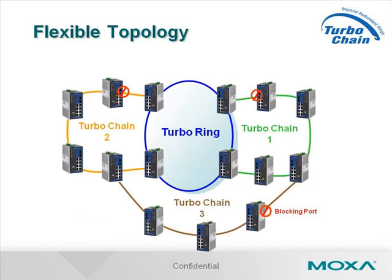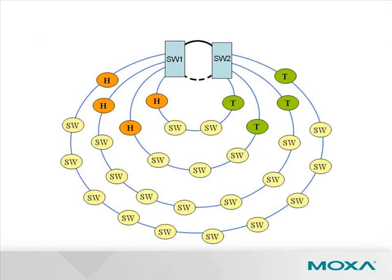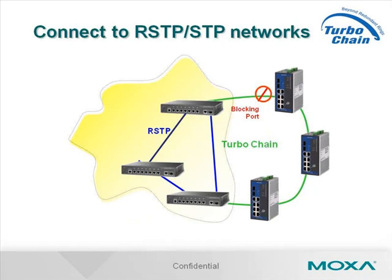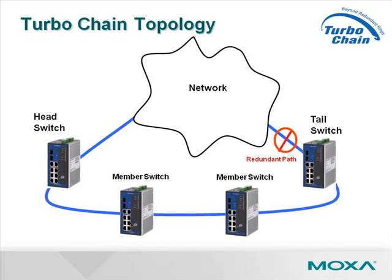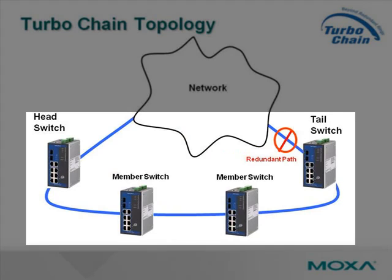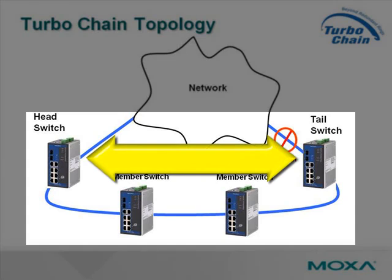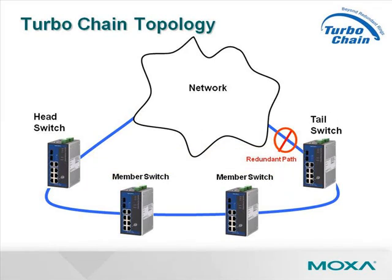Second, TurboChain is flexible — you are no longer limited to ring-only topologies. Third, TurboChain saves you time and money. TurboChain operates on the principle of an open ring or a chain link, so there is no need to close the ring. This can save you at least two ports and one cable run per segment.